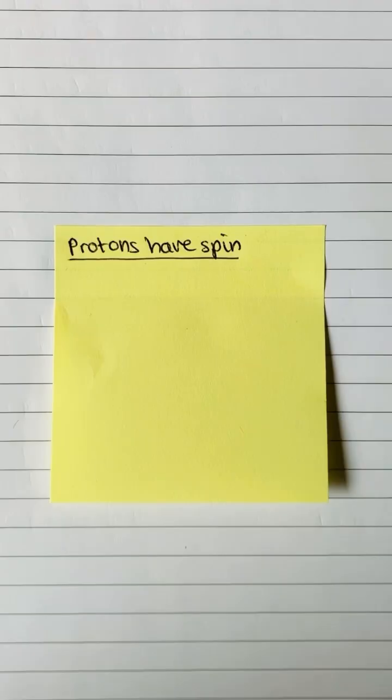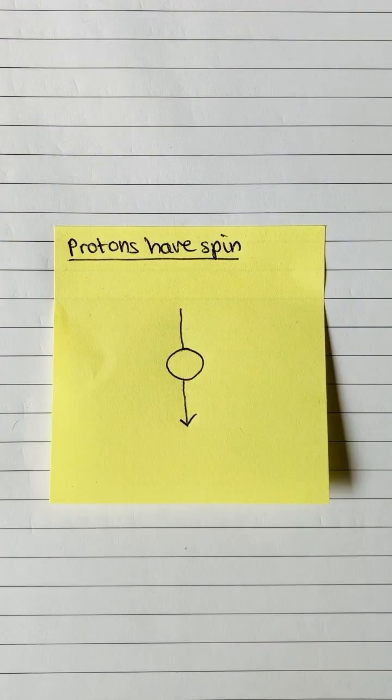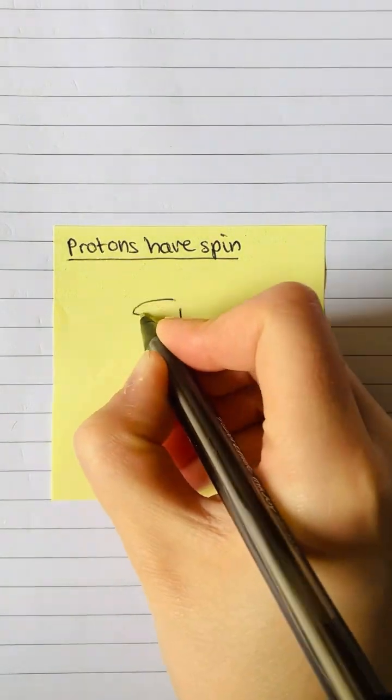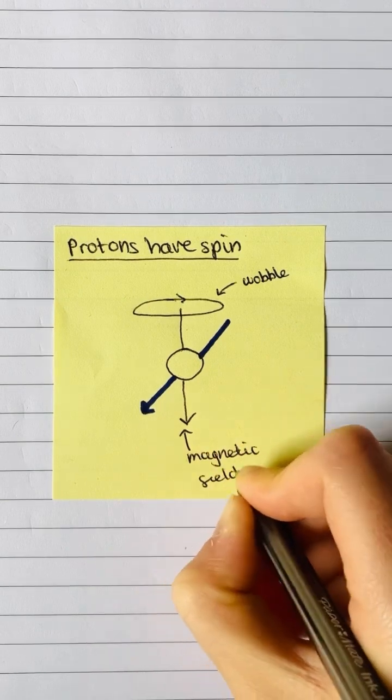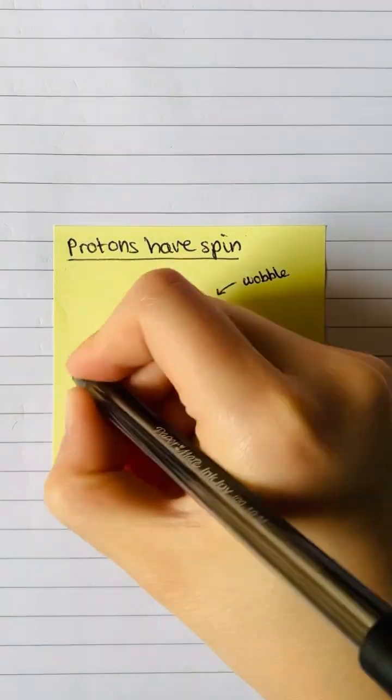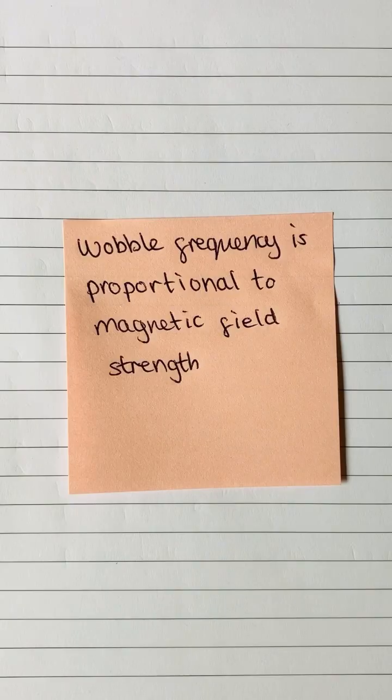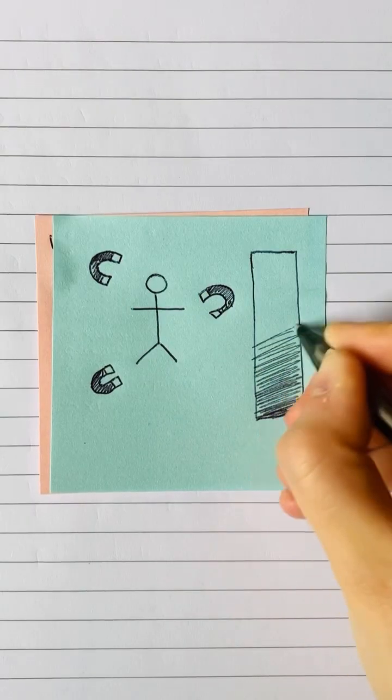Protons have a property known as spin, which means they act like tiny magnets. They align with the machine's magnetic field and wobble around the magnetic field lines as they spin. The frequency of this wobble is proportional to the magnetic field strength.